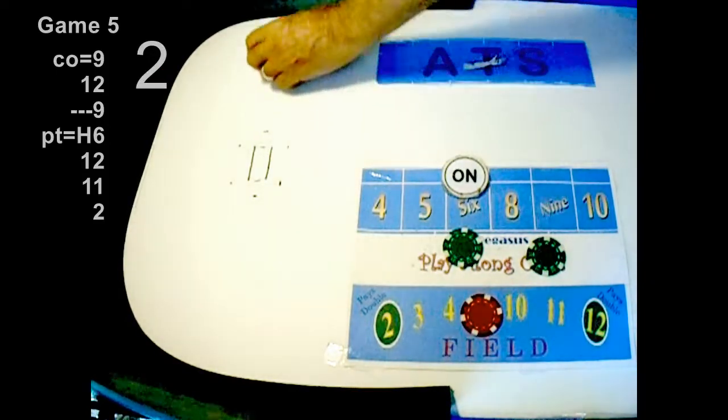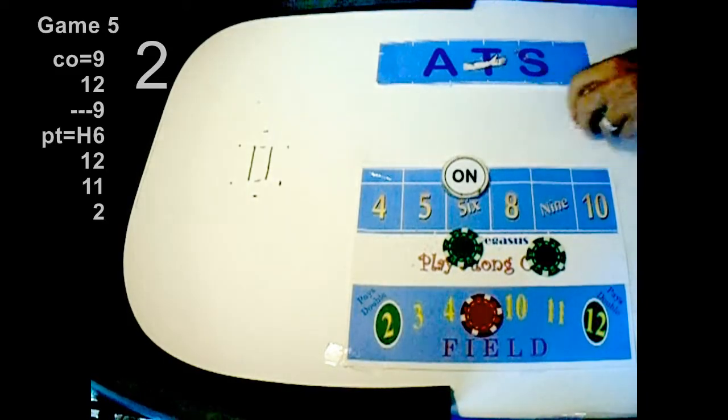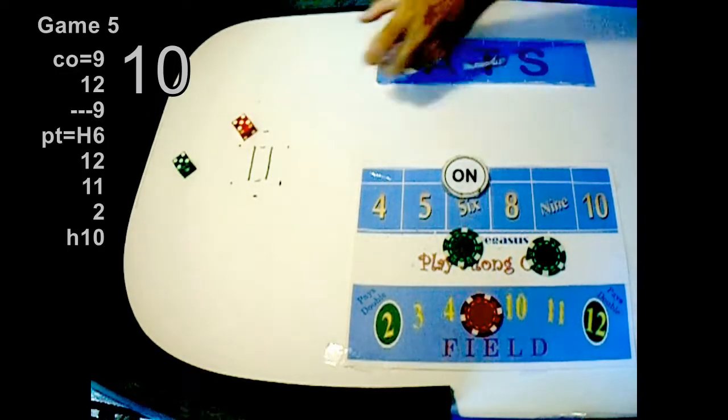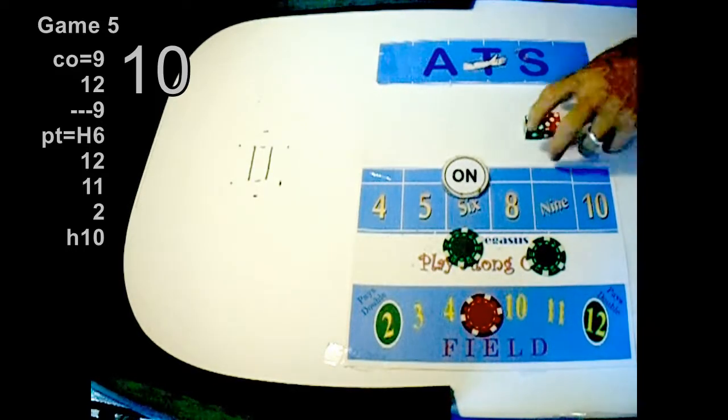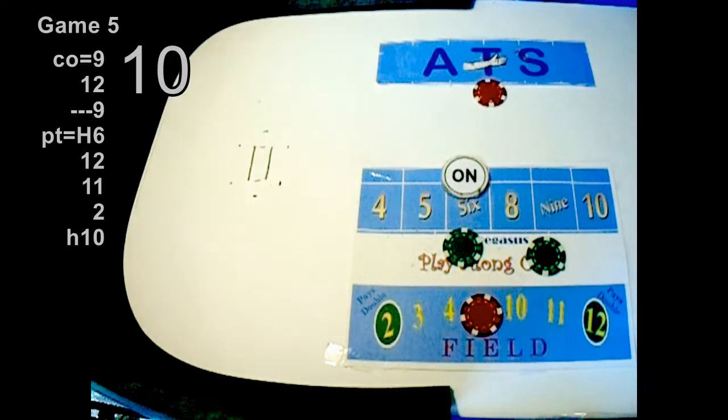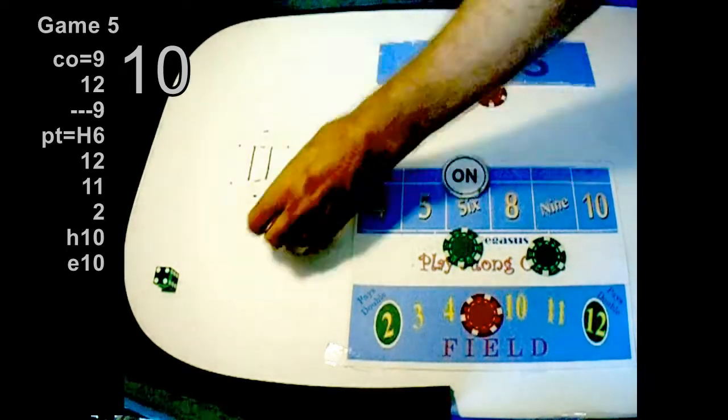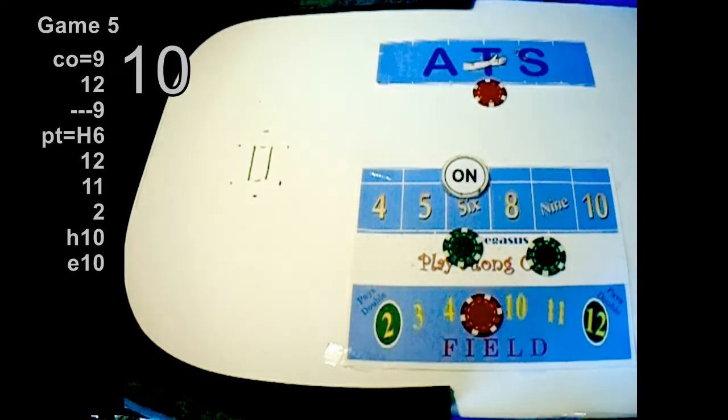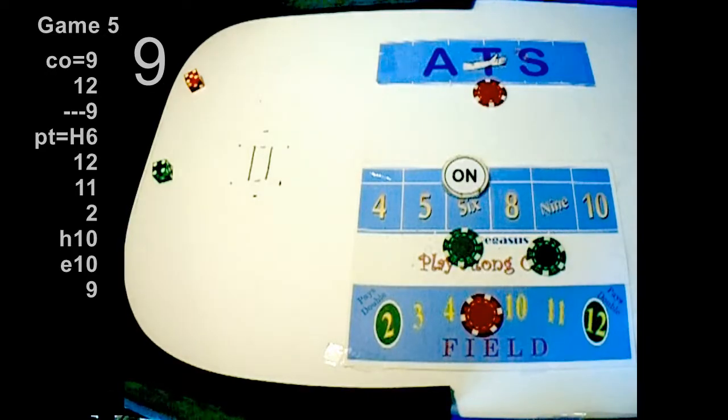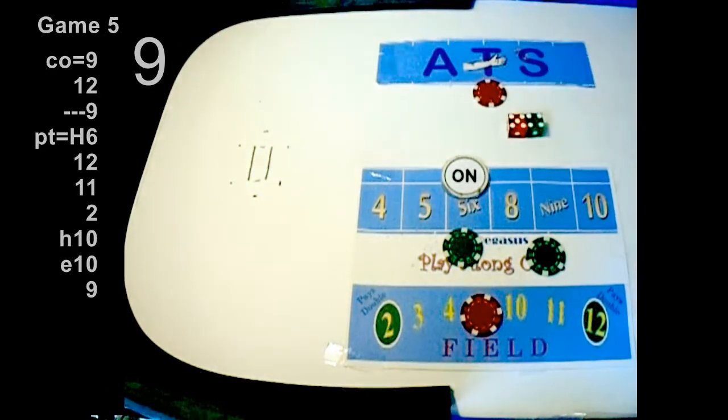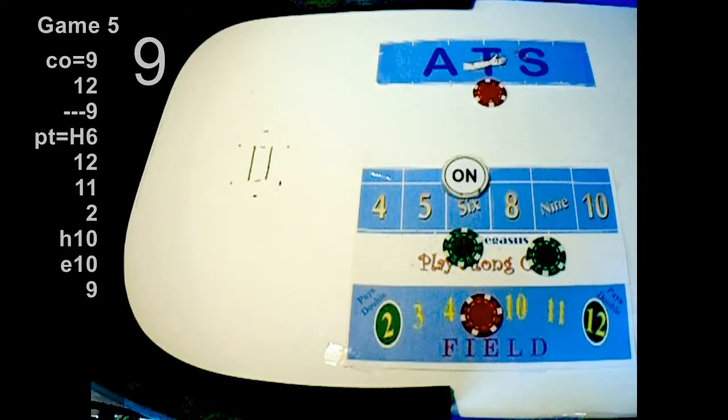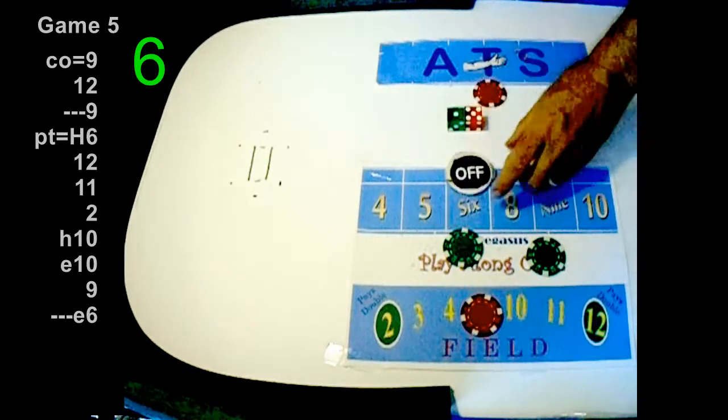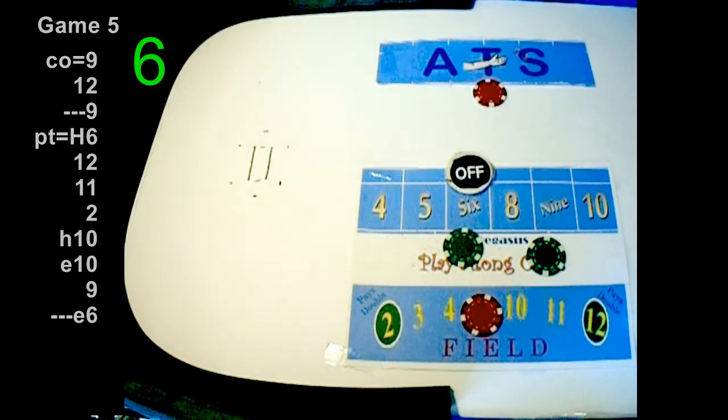Snake eyes, wow. Snake eyes too. Oh, got stars in your eyes, a hard ten. Yeah we get a 10, six four ten. Nine, four five nine. Six, that's our number, one five easy six. Easy six.